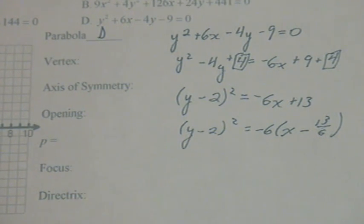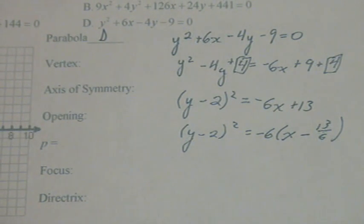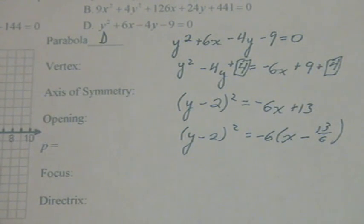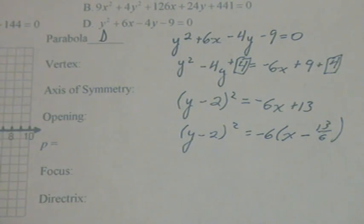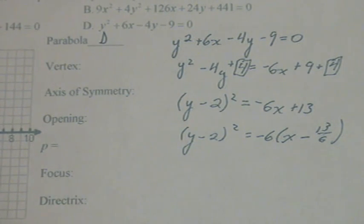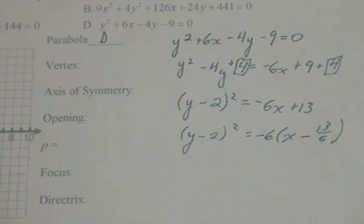We're going to take this parabola, which we already put into standard form, y minus 2 squared equals negative 6 times x minus 13 over 6, and we're going to find all of the required information for graphing. First,